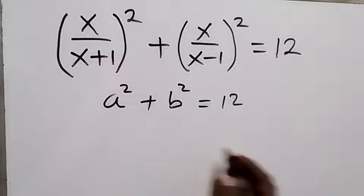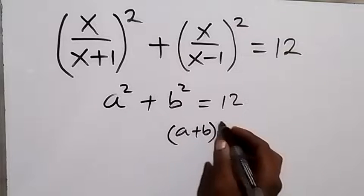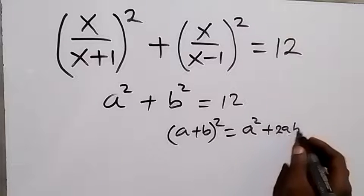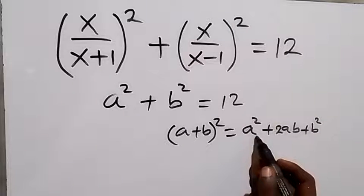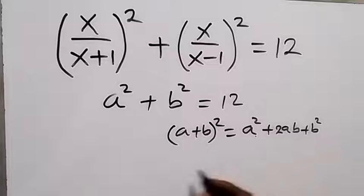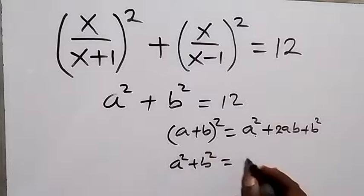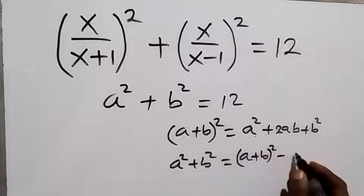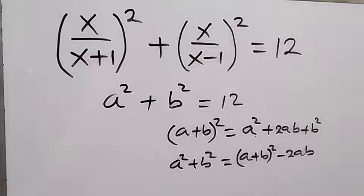From this identity, when we have (a+b) squared and we expand it, this gives us a squared plus 2ab plus b squared. From here we can see that a squared plus b squared, when we take it on one side, will now be equal to (a+b) squared minus 2ab. So we can write a squared plus b squared in the form of (a+b) squared minus 2ab.